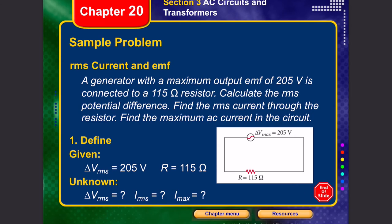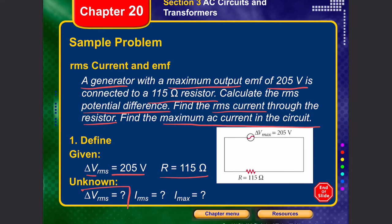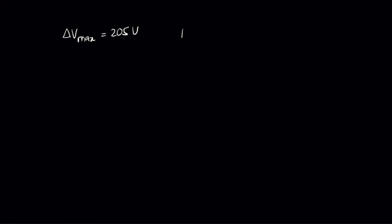Let's solve a problem. A generator with a maximum output of 205 volts is connected to a 150 ohm resistor. We need to calculate the RMS potential difference, the RMS current through the resistor, and the maximum AC current. Given: V-max equals 205 volts and resistance equals 115 ohms. We need to find I-rms, I-max, and delta V-rms.